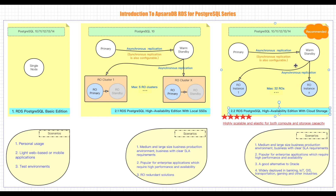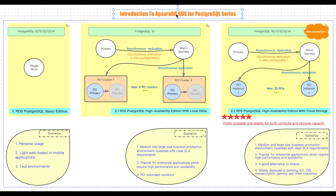The High Availability Edition with cloud storage is also worth recommending for many scenarios. It's suitable for most critical businesses with clear SLA and high-performance requirements in medium and large organizations. And as many others use PostgreSQL as a great choice for Oracle migration, using RDS for PostgreSQL High Availability Edition with cloud storage with its high-availability features is definitely a plus for enterprise-grade applications. It's now widely used in banking, IoT, GIS, transportation, gaming, and other industries. If you are currently using RDS for PostgreSQL, we would like to hear your feedback and use cases.